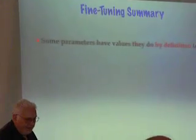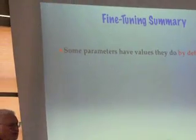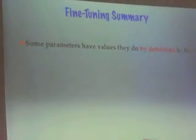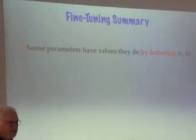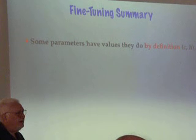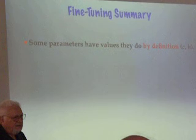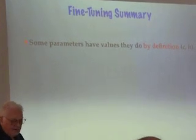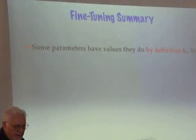So here's the summary of fine-tuning. Some of the parameters have the values they do by definition. The speed of light, Planck's constant, actually Newton's constant g, these are all arbitrary numbers. They can be anything you want. The speed of light is not an adjustable parameter. It's just whatever you want it to be. It's used to define the meter.